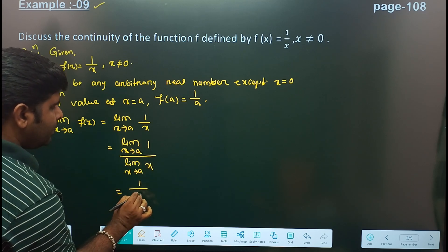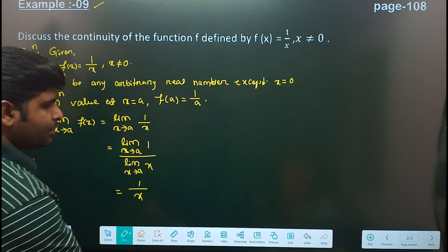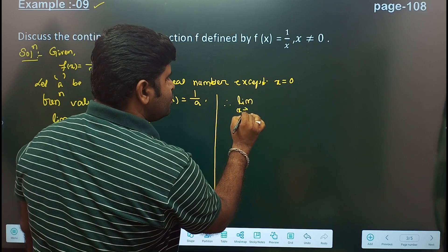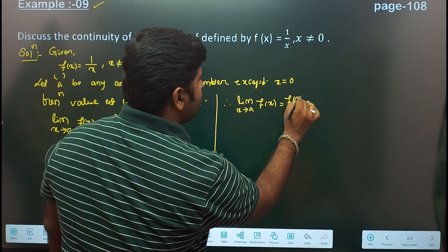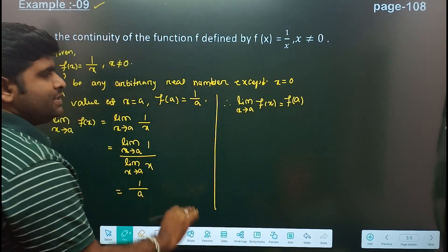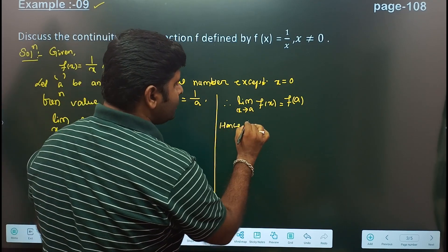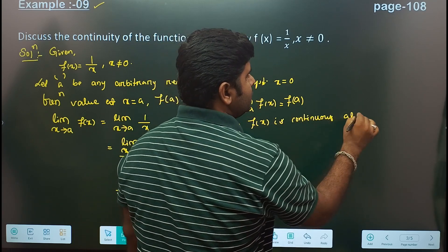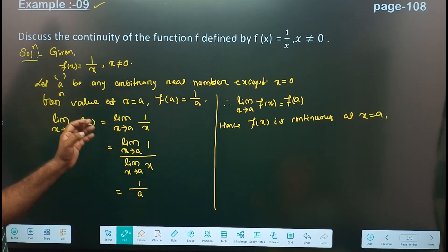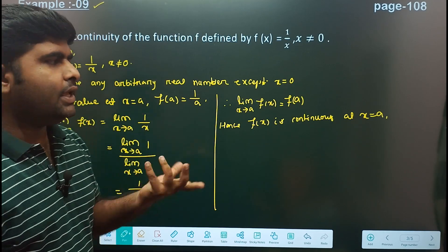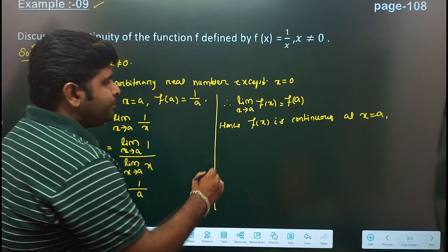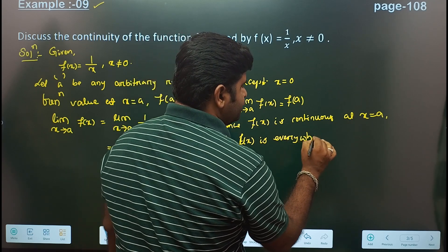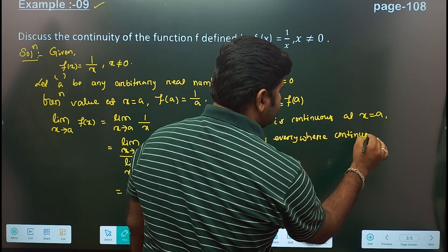Let small 'a' be any arbitrary real number. When x tends to a, we have a equal to a. Therefore, the limit as x tends to a of f(x) equals f(a). So we can say f(x) is continuous at x equal to a. Since a is any real number, f(x) is everywhere continuous.